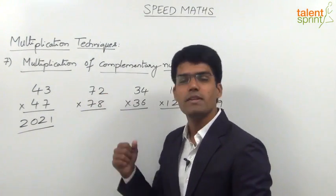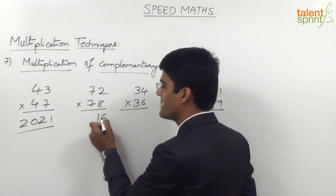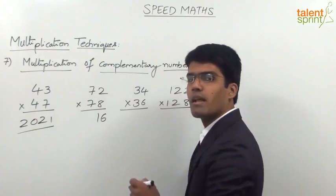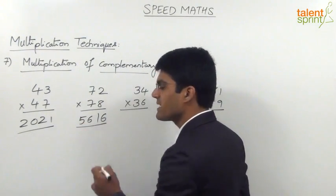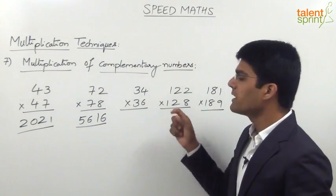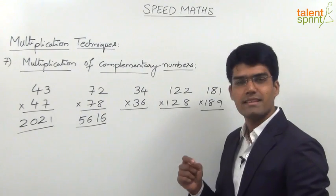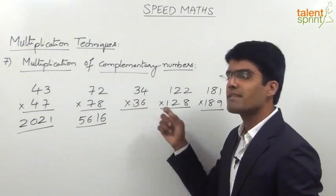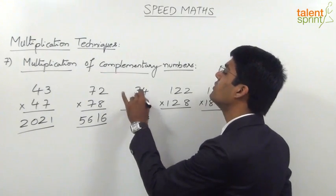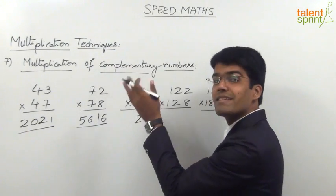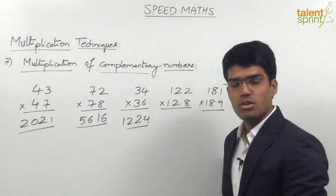Likewise, in case of 72 and 78, the answer is: 2 into 8 is 16, and 7 into the next number — 7 into 8 is 56 — so the answer is 5616. Moving on to 34 and 36, these are also complementary numbers because 4 plus 6 equals 10 and the tens places are equal. So 4 into 6 is 24, and 3 into the next digit 4 — 3 into 4 is 12 — so the answer is 1224.